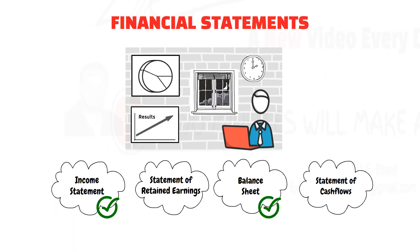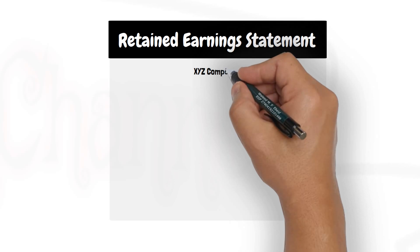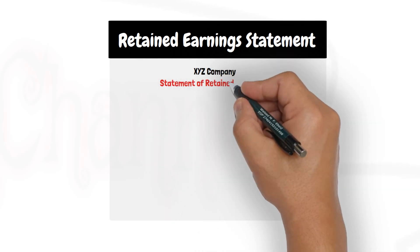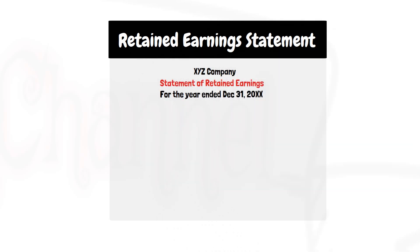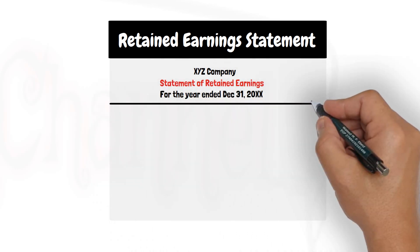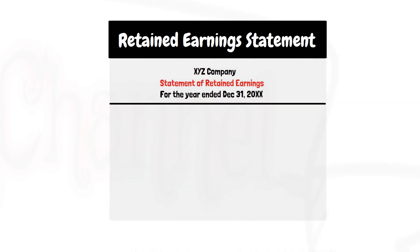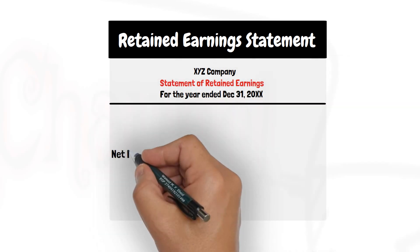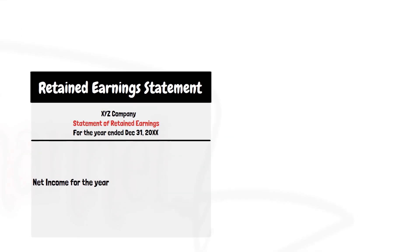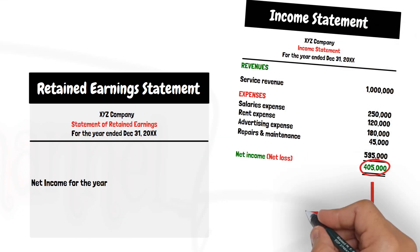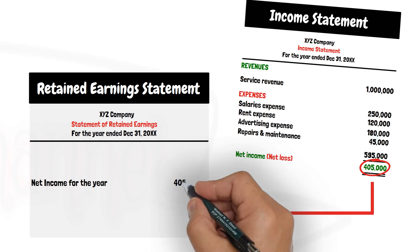So let us talk about the statement of retained earnings. This statement also starts with a header showing the name of the company, the name of the statement, and the period covered by the statement. Then we have a few items here in the statement — the net income for the current period, which is brought here from the income statement for the current reporting period.